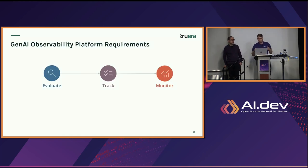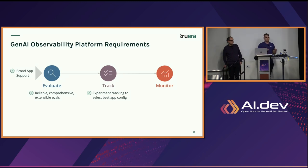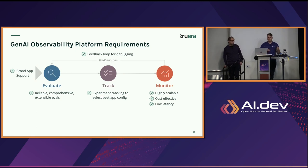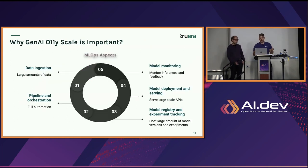As we think about building these into requirements for an observability platform: in the evaluation stage, we want broad app support to evaluate not only RAGs but also agents and more complex applications. We want reliable, comprehensive, and extensible evals to have a nuanced view of performance. We want experiment tracking to understand when we change a prompt or retrieval strategy, how that affects downstream performance. And in production, we want a highly scalable, cost-effective, and low-latency way to measure these things over time, plus a feedback loop connecting production monitoring all the way back to evaluation so we can iterate, find root causes, and improve our application.